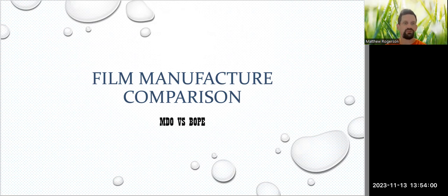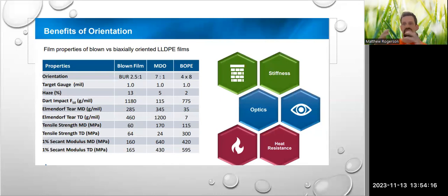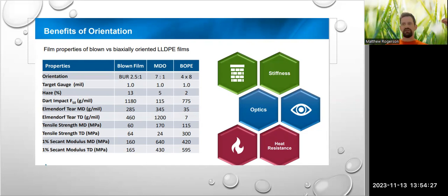So if we start with a short overview of the different orientations: the three main options being discussed here are blown film, where the film is literally blown to create a bubble — that's how it's blown out and created into a flexible film. Then there is machine direction oriented film, which means it is pulled and stretched lengthwise in the direction that the machine is moving.